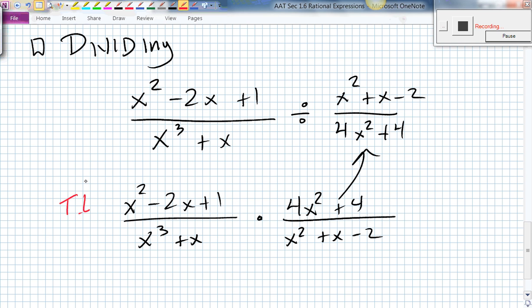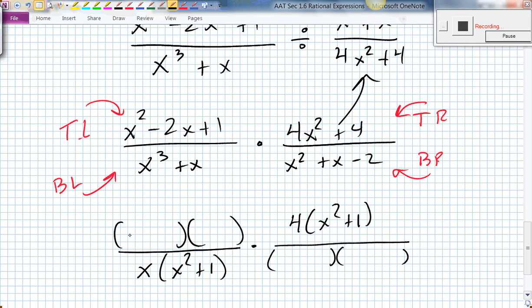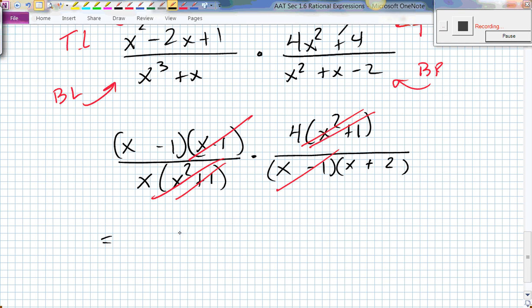This is what I'm going to call the top left piece, bottom left, top right, bottom right. We need to factor all of these pieces. The top left is the product of two binomials. Bottom left is x times x squared plus 1. Top right is 4 times x squared plus 1. I can already see these two are going to cancel each other out. Bottom right is 2 binomials. So top left is x and x, 1 and 1, minus and minus. Bottom right is x and x, 1 and 2, plus and negative. Now all that cancels with all of that. So I have a grand answer of 4 times x minus 1 all divided by x times x plus 2.